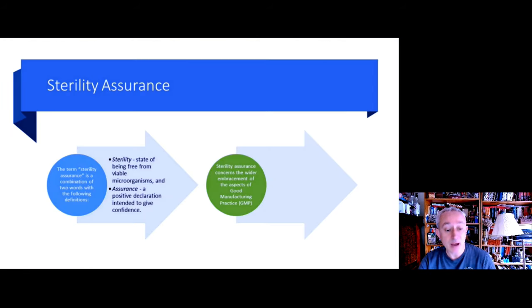So we have the term sterility assurance, which is the combination of two words for which we can develop the following definitions. We have sterility, which is the state of being free from viable microorganisms, and the word assurance, which is a positive declaration designed to give us a degree of confidence.